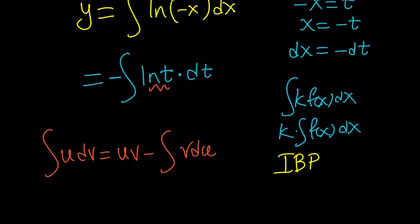I wouldn't want to integrate ln of t. I don't even know how to integrate. That's why I'm using this method. So obviously, I wouldn't call it DV. I would call it U.